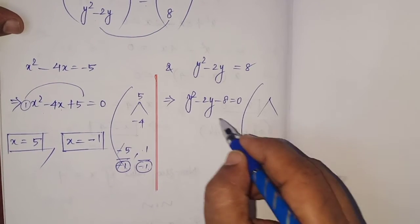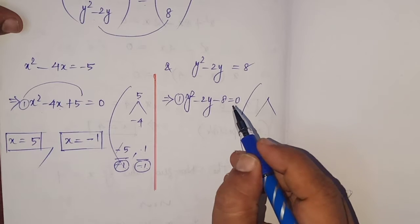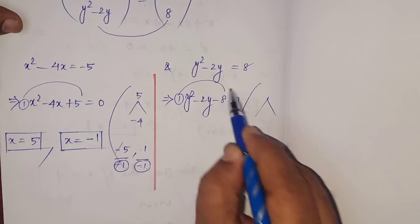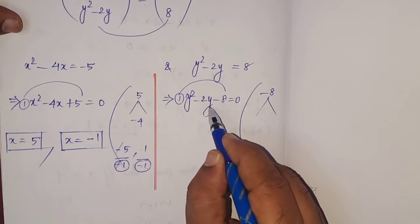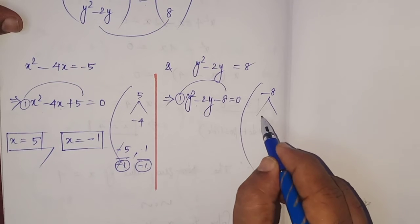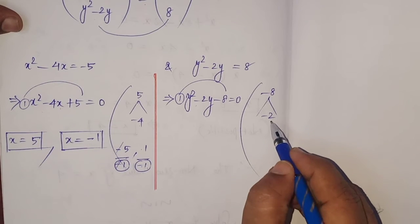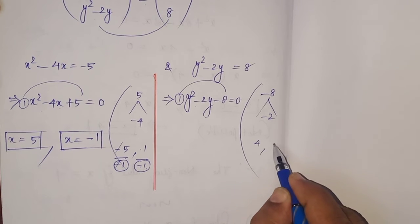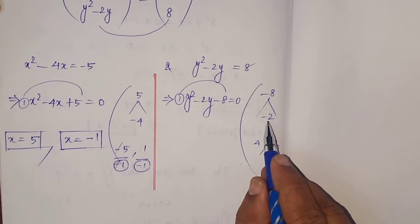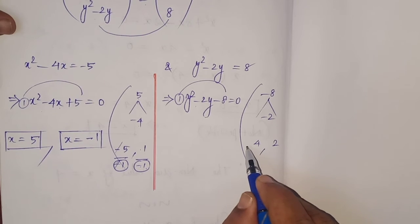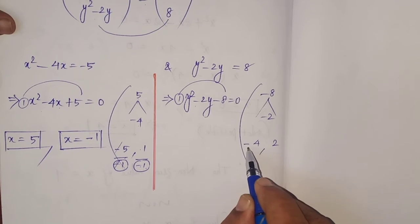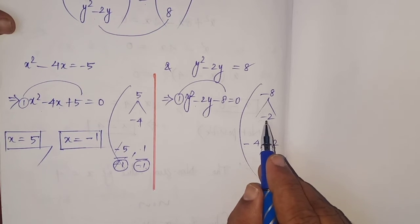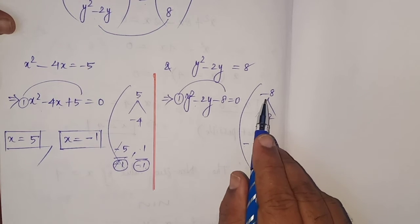Once again, factorize. The coefficient of y squared, that is equal to 1, 1 into minus 8, that is equal to minus 8. The coefficient of y, that is equal to minus 2. Product minus 8, sum minus 2. The combination, we have to consider 4 and 2 only. For getting minus 2, we have to introduce minus 4, the greater number. Minus 4 plus 2, that is equal to minus 2. Product of the two numbers equals minus 8.